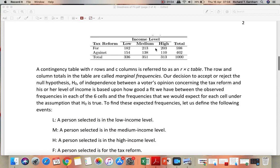We have here three income levels: the low, medium, and high, and then two options - the first one is for those who are in favor of the tax reform, and then the second option is against the tax reform. A contingency table with R rows, in this case we have two rows, and then C columns, here we have three, is referred to as R by C table.